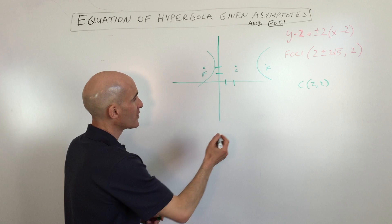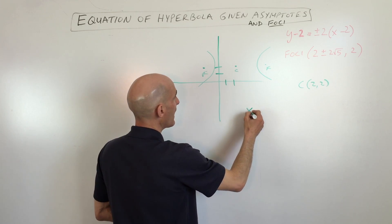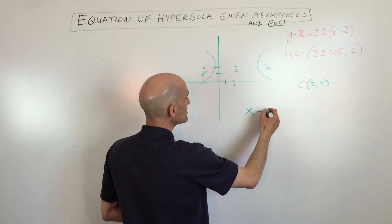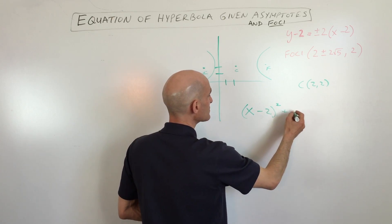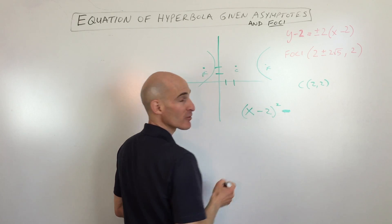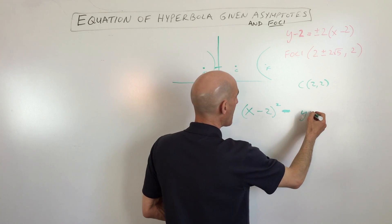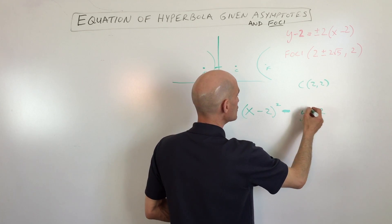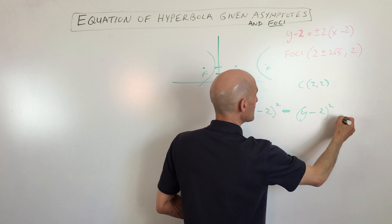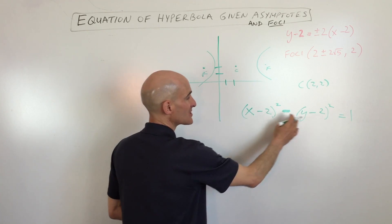So now let's put together what we know so far. So we know that x minus 2 squared plus, minus for hyperbolas, plus for ellipses, y minus 2 squared equals 1. So we've got our center, 2, 2.